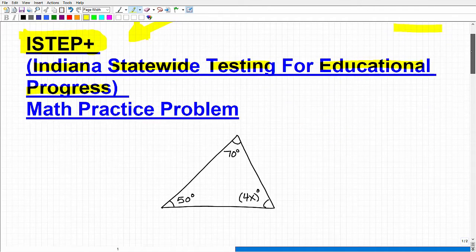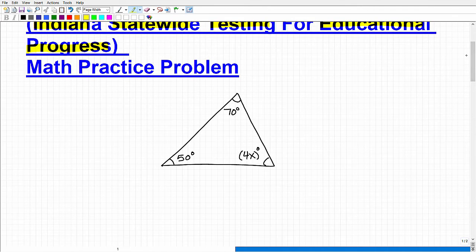And that's the kind of math that you really need to be pretty proficient at to do well on a test like the ISTEP plus. So let's go ahead and get to our problem. Here we have a triangle, and you can see it has 50 degrees here in this corner of the triangle, then here I have 70 degrees, and then over here I have 4x degrees. So what I'd like you to do is tell me what that angle measure is.